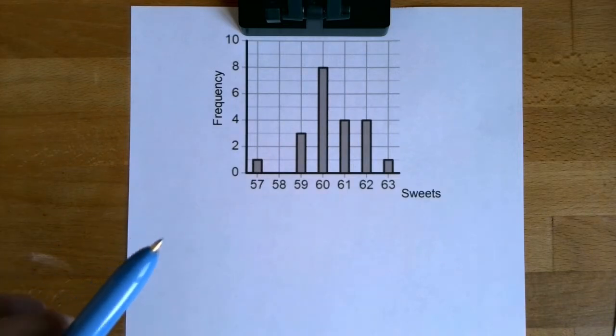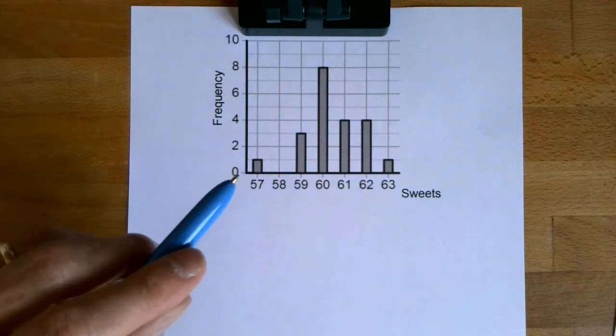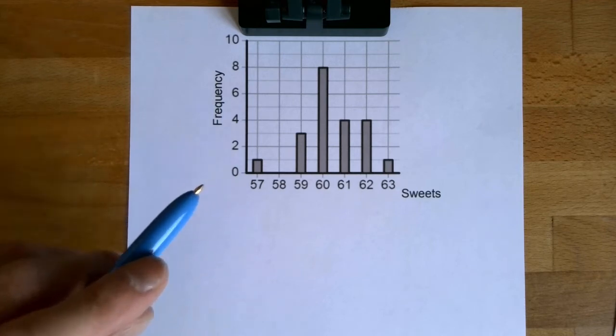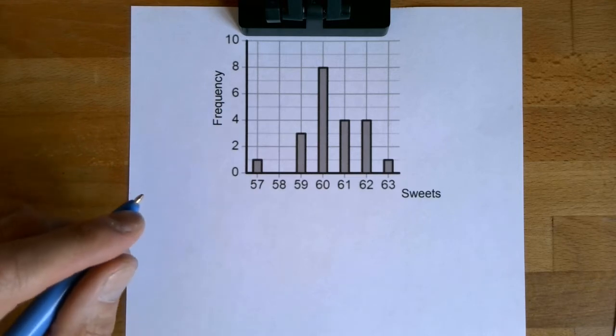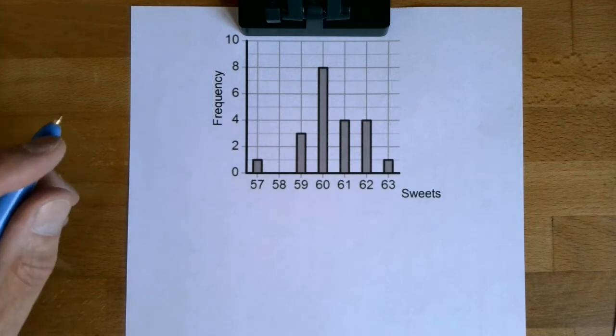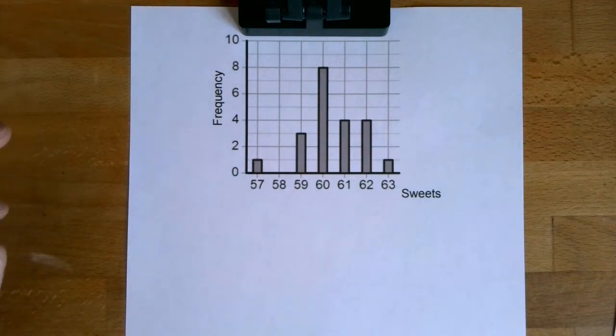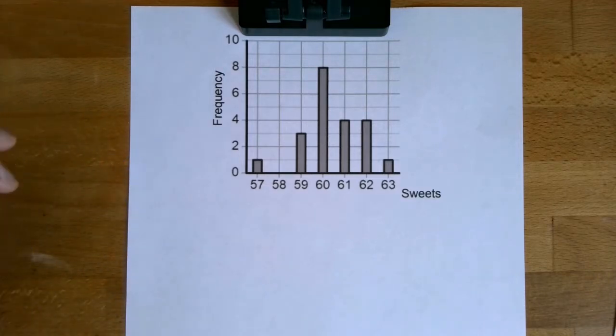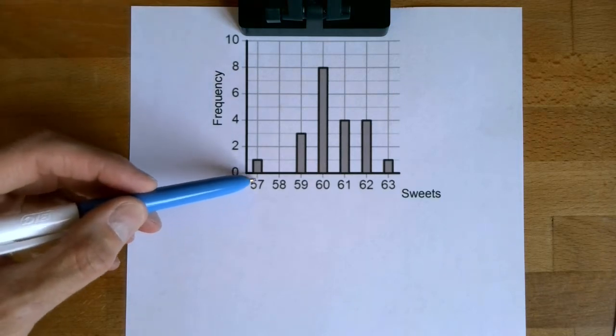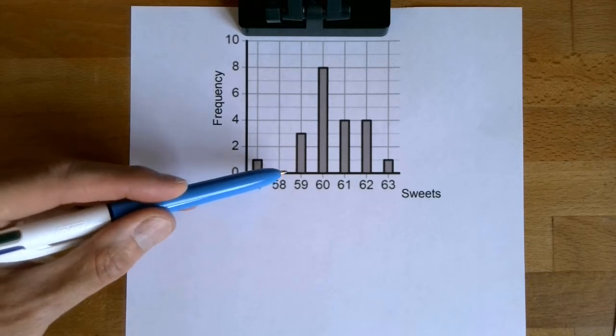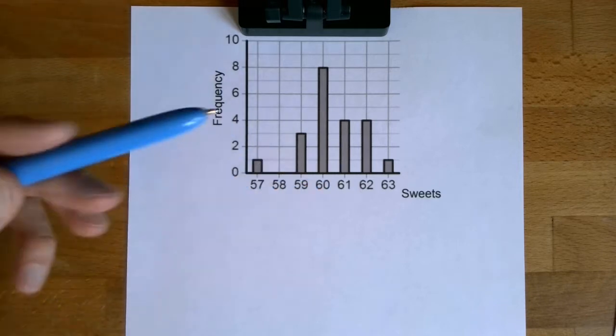I want to start by working out the mean of this set of data. Someone has taken a load of packets of sweets and the sweets claim to have 60 sweets in each packet. They opened up each packet and counted the number of sweets. I don't know if they then went on and ate them, but there we go.